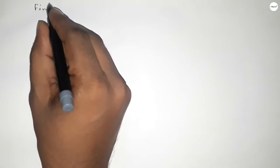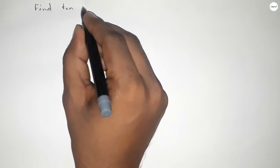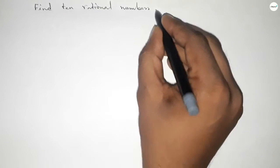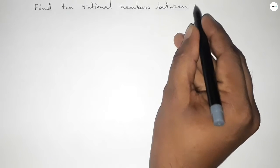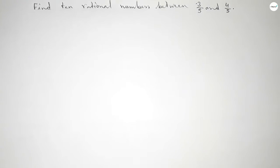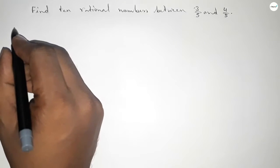Hi everyone, welcome to SHZ classes. Today in this video we have to find 10 rational numbers between 3 over 5 and 4 over 5. So finding 10 rational numbers between 3 over 5 and 4 over 5, let's start the video.